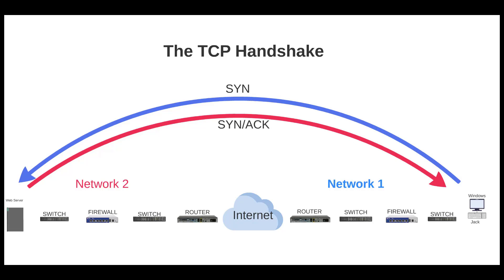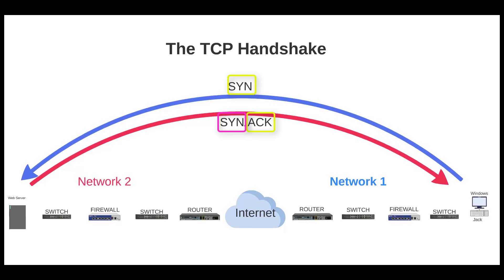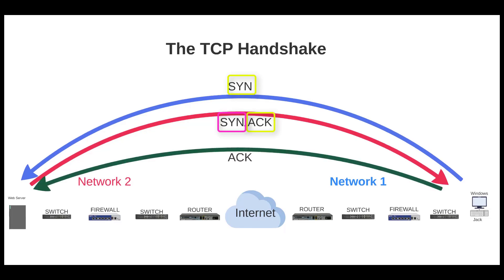When the client Jack receives this SYN ACK packet, the web server has sent an ACK to acknowledge the client's first SYN packet, and also sent its own SYN packet. So now Jack, the client machine, needs to send back an acknowledgement for the web server's SYN packet. Jack sends back an ACK for the SYN that the web server sent. It doesn't need to acknowledge the acknowledgement — that's already done.